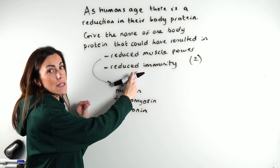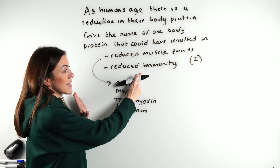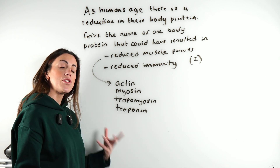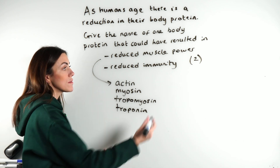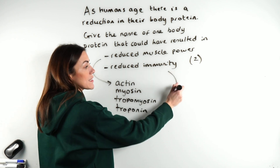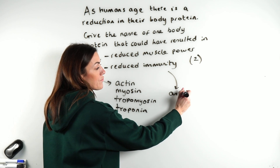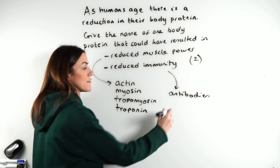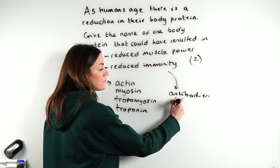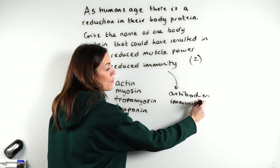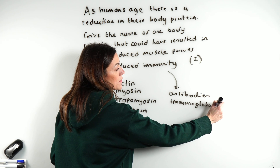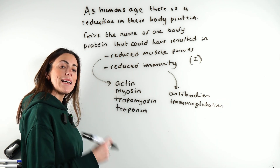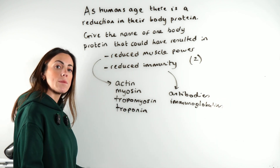Reduced immunity is what we need to think about to get the second mark. You need to think about what protein is produced as our immune response. The answer is antibodies, or to give them their scientific term, immunoglobulins. These are proteins produced by our plasma cells in our immune response.